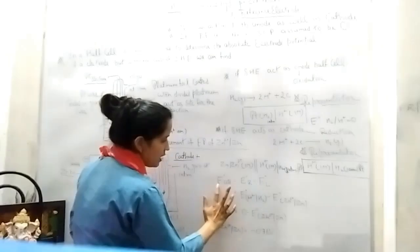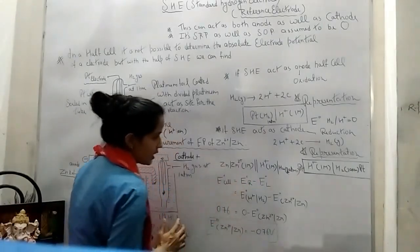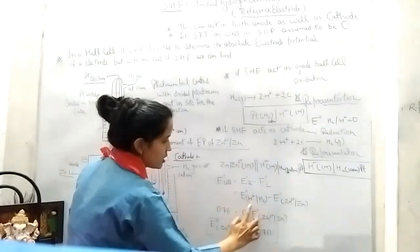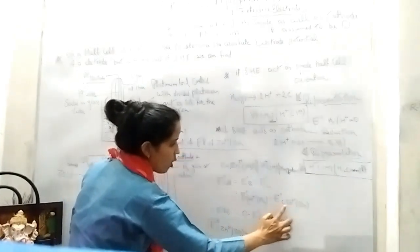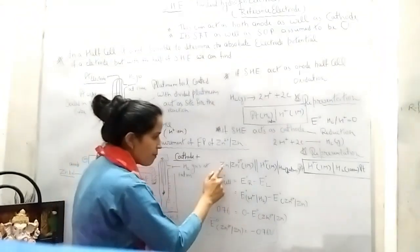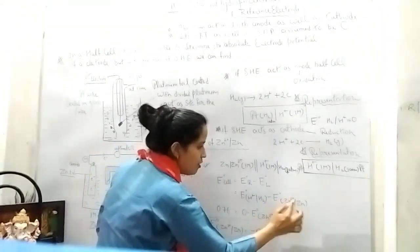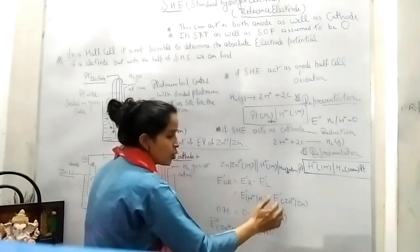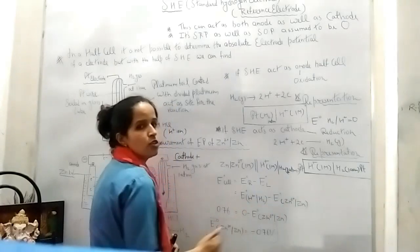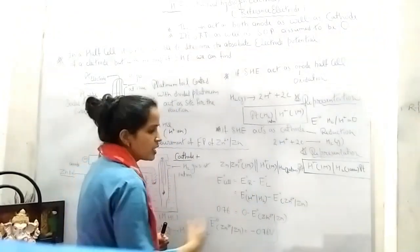You have studied about the EMF: E°cell equals E°right minus E°left. On right, SHE I have represented here: H+/H₂ minus E° Zn²⁺/Zn. You may ask why you have written Zn²+/Zn when oxidation is occurring.